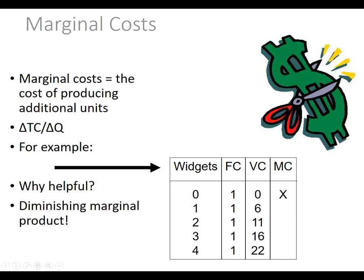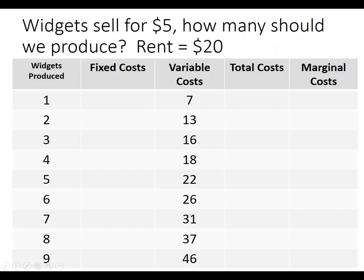From a management standpoint, I want to know what's going on with that fourth widget. Do I need to move a desk? Do I need to get more raw materials? Do I need to train an employee? What do I need to do to maximize production? I'll pick up with this example in the next video.